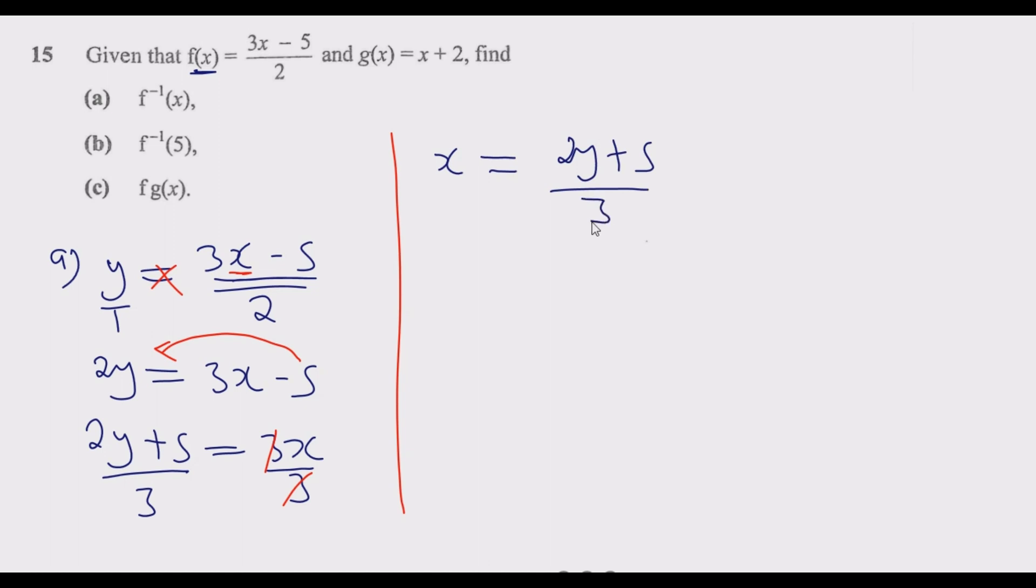Once you do that, now you need to write it as f^-1(x). So now whatever there is x, I'm going to replace with this function. Then on the right-hand side, whatever there is y, I'm going to now replace with x. So we have f^-1(x) = (2x + 5)/3. So I'm just changing only where there is y after I make x the subject of the formula.